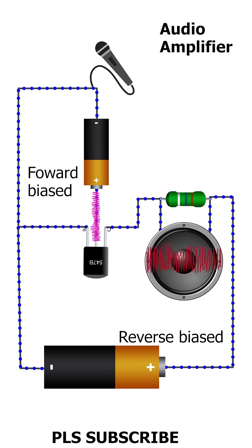By controlling the base current, we can control the collector current, and thus amplify the input signal.